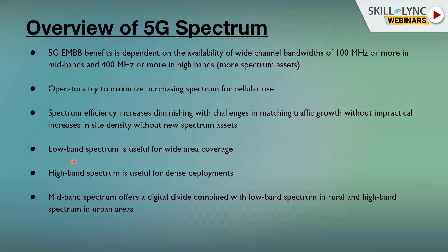Low band spectrum is useful for wide area coverage. In 5G, we have low band, mid band, and high band. Low band is roughly 800 MHz to 2600 MHz, mid band generally 3500 MHz to 5000 MHz, and high band is millimeter wave in the gigahertz range — we use the term sub-six gigahertz as a reference. High band spectrum is useful for dense deployments, such as highly densified indoor sites in a heterogeneous network. Mid band spectrum offers a digital divide, combining low band for rural and higher band for urban environments.